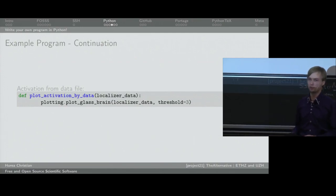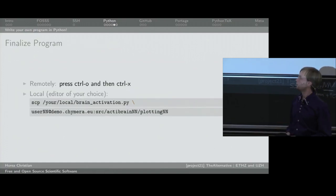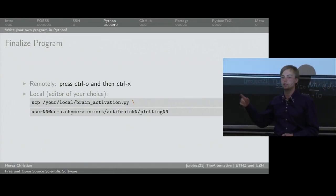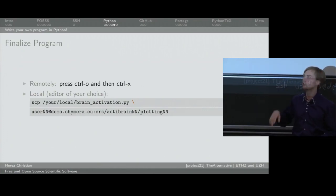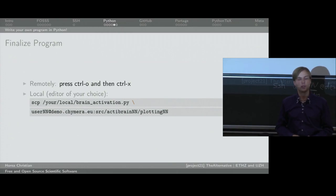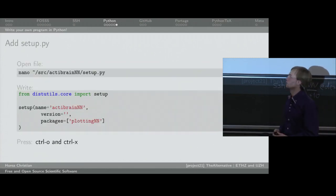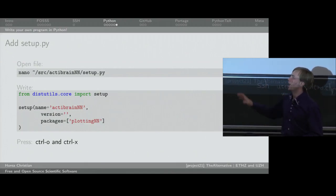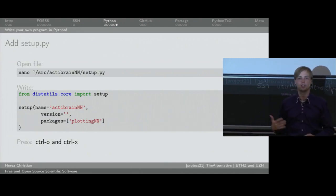Python is a rather mature programming language and has already taken care of packaging. To finalize the program in nano, press Control-O, enter, and then Control-X to save and exit. Now we need a setup file — a really short Python file that tells whatever Python package manager you use how to manage this package. You'll create a file called 'setup.py' under the main root of your program: nano, tilde, the source directory, this particular program, then setup.py. Inside, you write: 'from distutils.core import setup' — the function that sets up the package.